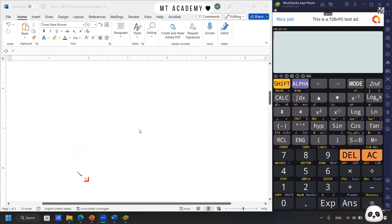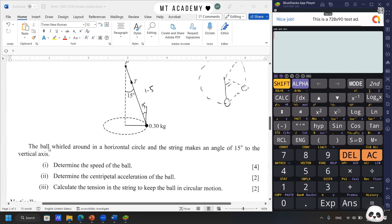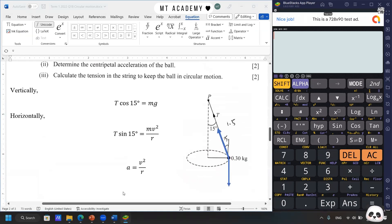So we move on to question B. A ball of mass 0.3 kg is attached to a string of length 1.5 meter and suspended from P to make a conical pendulum as shown in the diagram below. I have discussed a similar question before. The ball whirls around a horizontal circle at a string with an angle of 15 degrees to the vertical axis. Determine the speed of the ball, determine the centripetal acceleration of the ball, calculate the tension in the string to keep the ball in circular motion. Let's try to solve the questions.